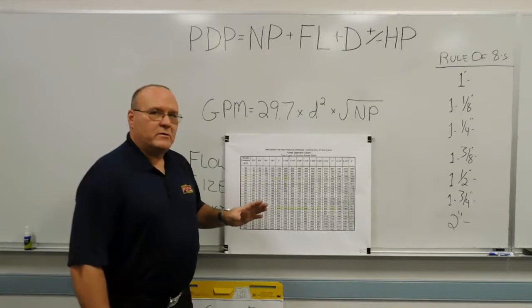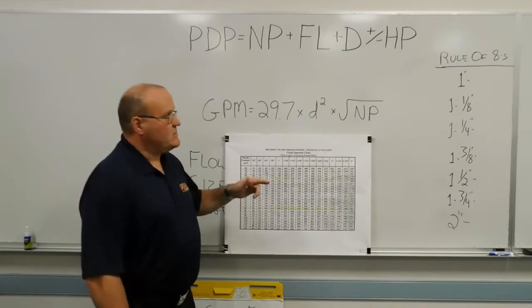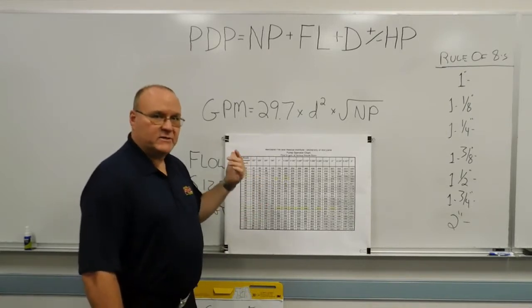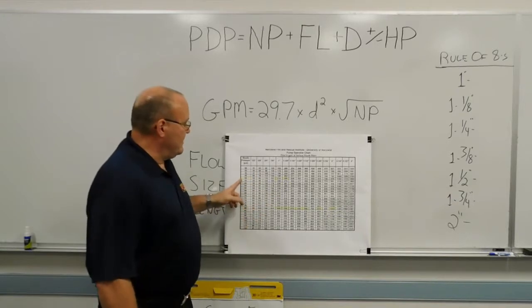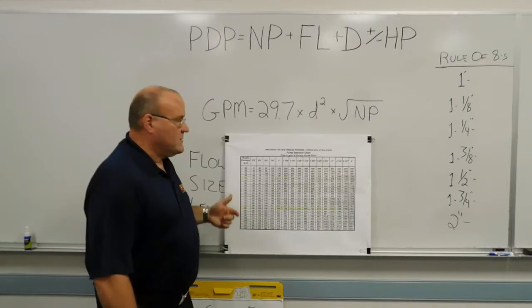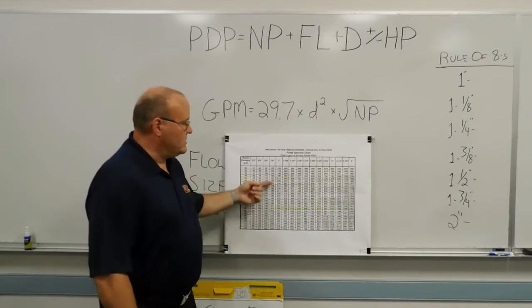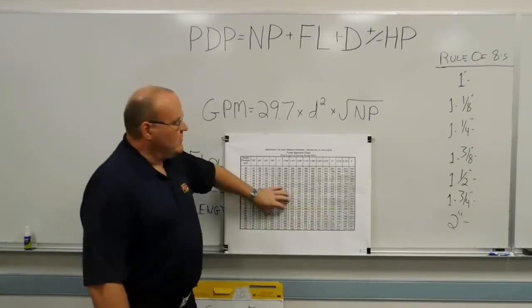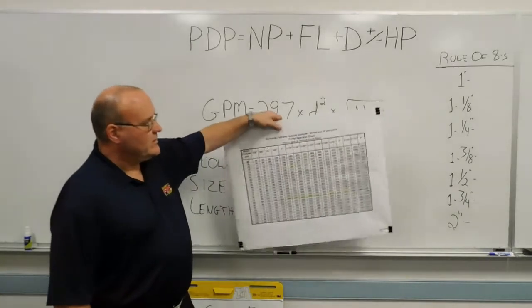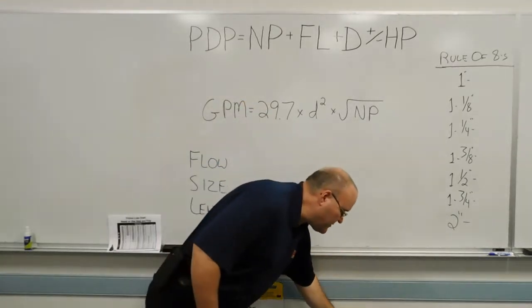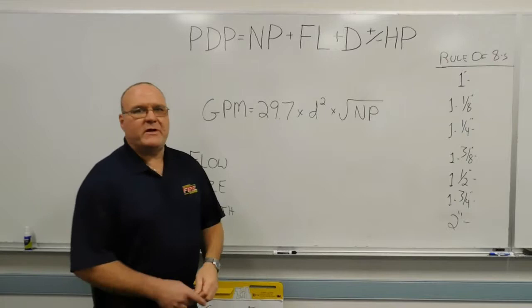Important that you know your nozzles, especially your master streams, your solid streams, your hand lines with the solid stream, to know what you're flowing at the rated nozzle pressure. So 50 pounds or 80 pounds, those solid stream nozzles, what you can expect for a flow from them. And we'll revisit this here in just a moment. But a pumps chart is a pretty good method if you have those.